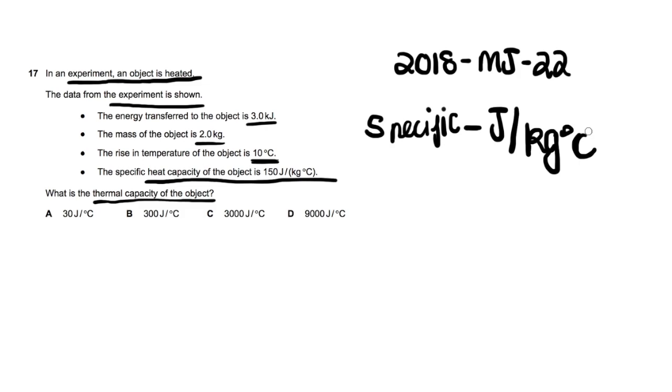But the thermal capacity of the object, and this is the official definition, is the amount of energy it takes to raise the temperature of the object without factoring the mass in the equation. So it's just a measure of how much energy it takes to raise the temperature of an object. And in fact there is a formula here.